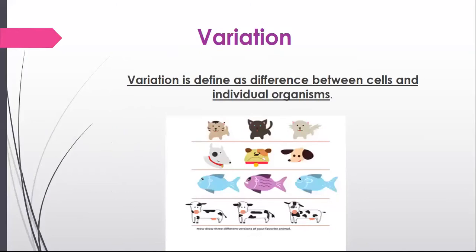Variation. All people are human — they belong to the same species. Your friends and classmates may have different eye colors and hair color. Some will be boys and some will be girls. Some will be tall and some will be shorter. The presence of differences between living things of the same species is called variation.